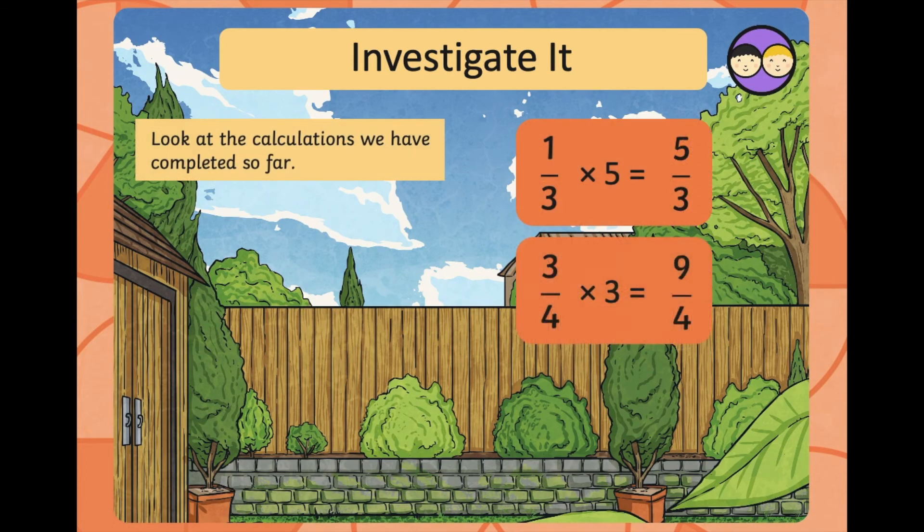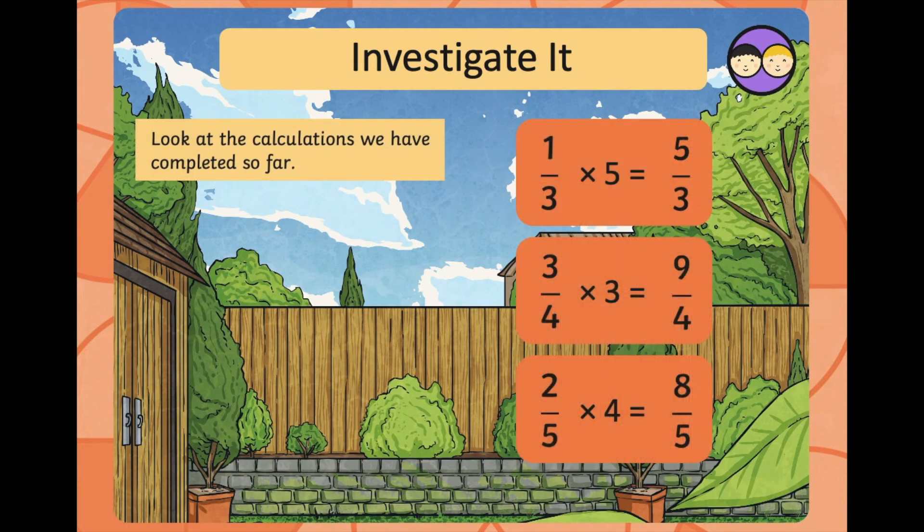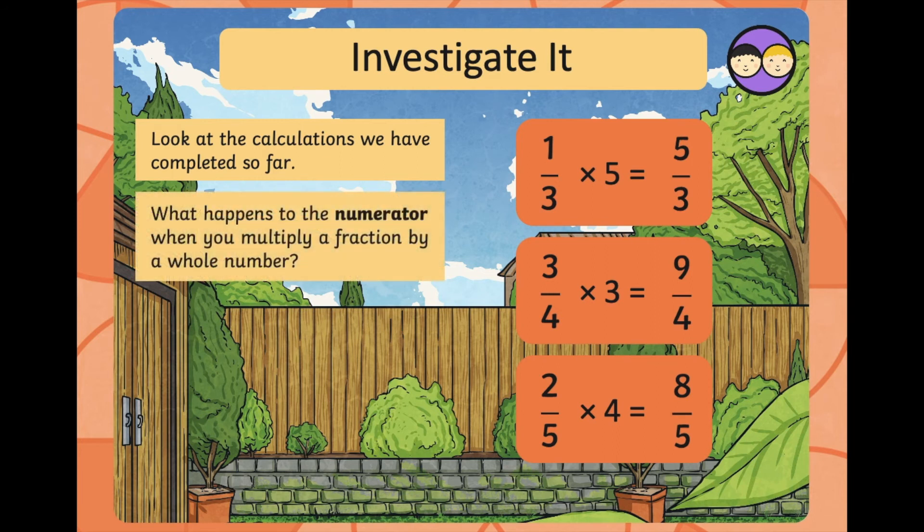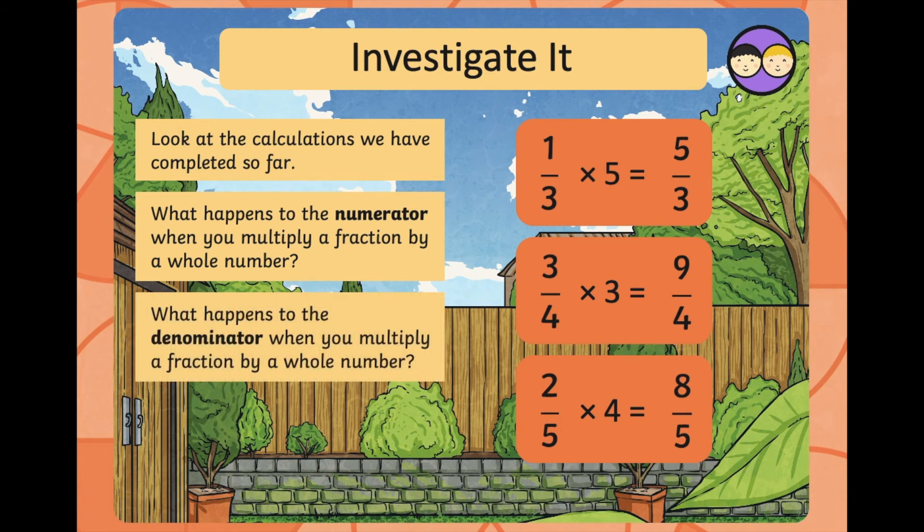Investigate it. So, let's have a look at the calculations we've completed so far. We've got one third times five, which is five thirds. Three quarters times three, which is nine quarters. Two fifths times four is eight fifths. What happens to the numerator when you multiply a fraction by a whole number? And what happens to the denominator when you multiply a fraction by a whole number?